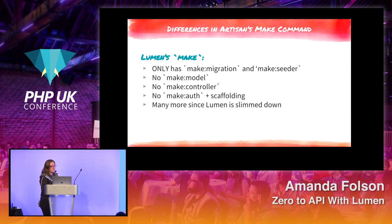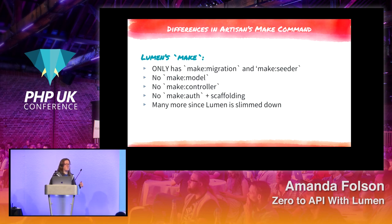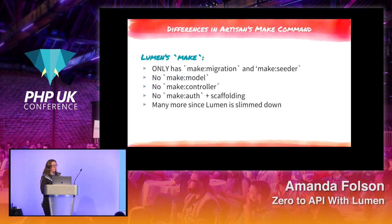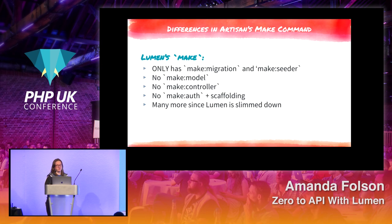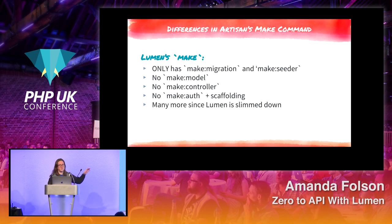Lumen's make command is also missing a number of things. You only have make:migration and make:seeder. There's no way to generate a model, no ability to make controllers via command line, and the authentication scaffolding is not present — there is authentication middleware, but you're missing the login forms and automatic JWT generation. Despite these things not being in the framework, there are great examples in the documentation to help you get started.